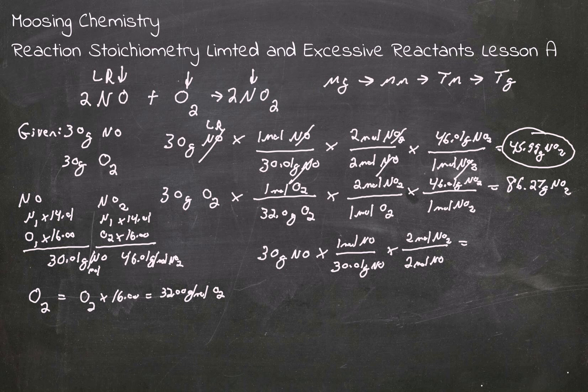And so we're going to take 30 divided by 30.01, which is going to equal times 2 divided by 2, which is going to equal 1.0 moles of NO2.